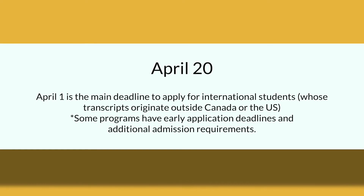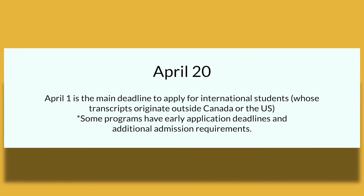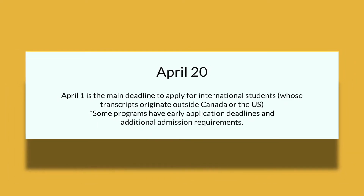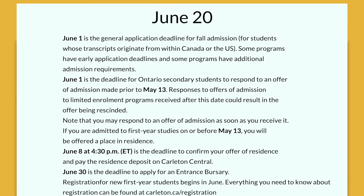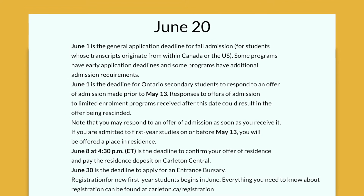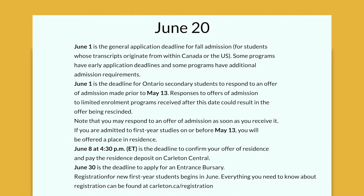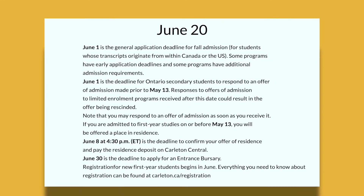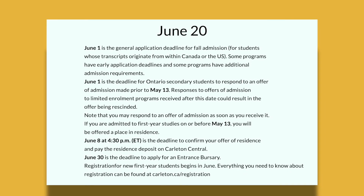April 1st is the main deadline to apply for international students whose transcripts originate outside of Canada or the US. Some programs have early application deadlines and additional admission requirements. June 1st is the general application deadline for fall admission for students whose transcripts originate from within Canada or the US. June 1st is also the deadline for Ontario secondary students to respond to an offer of admission made prior to May 13th.